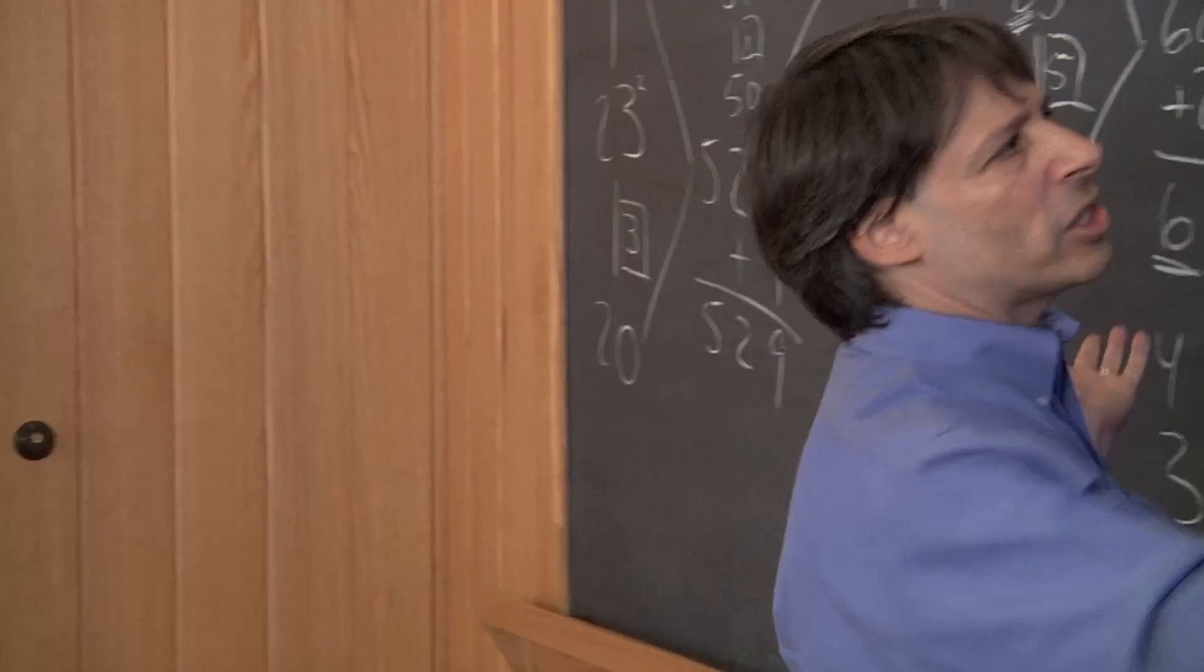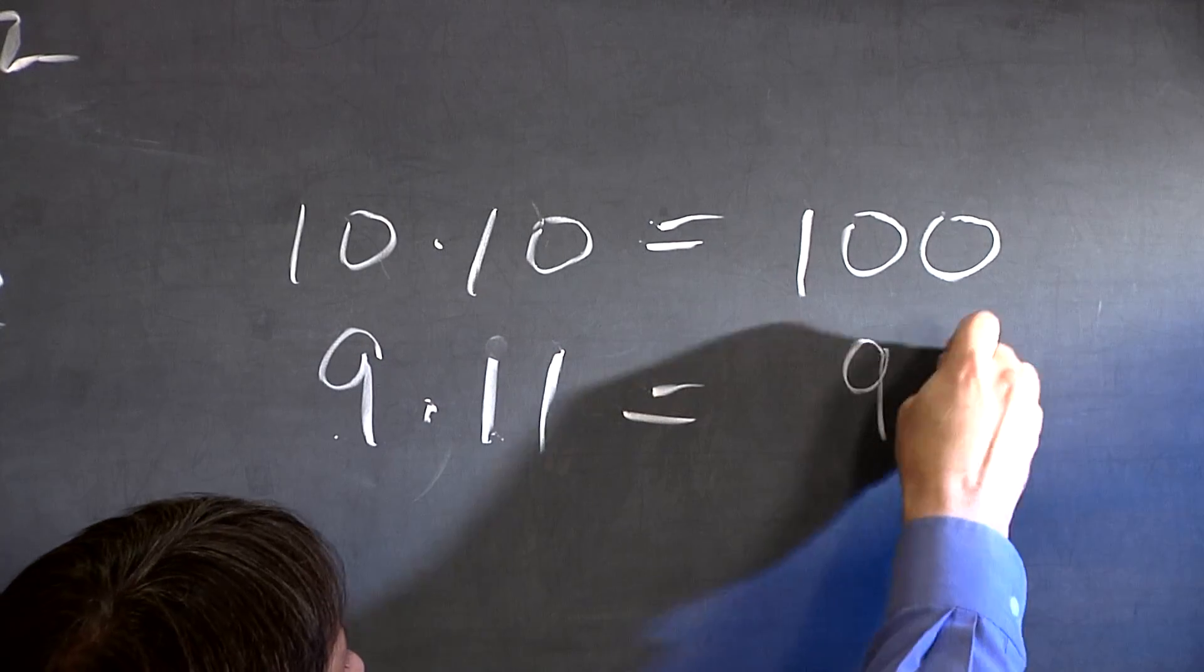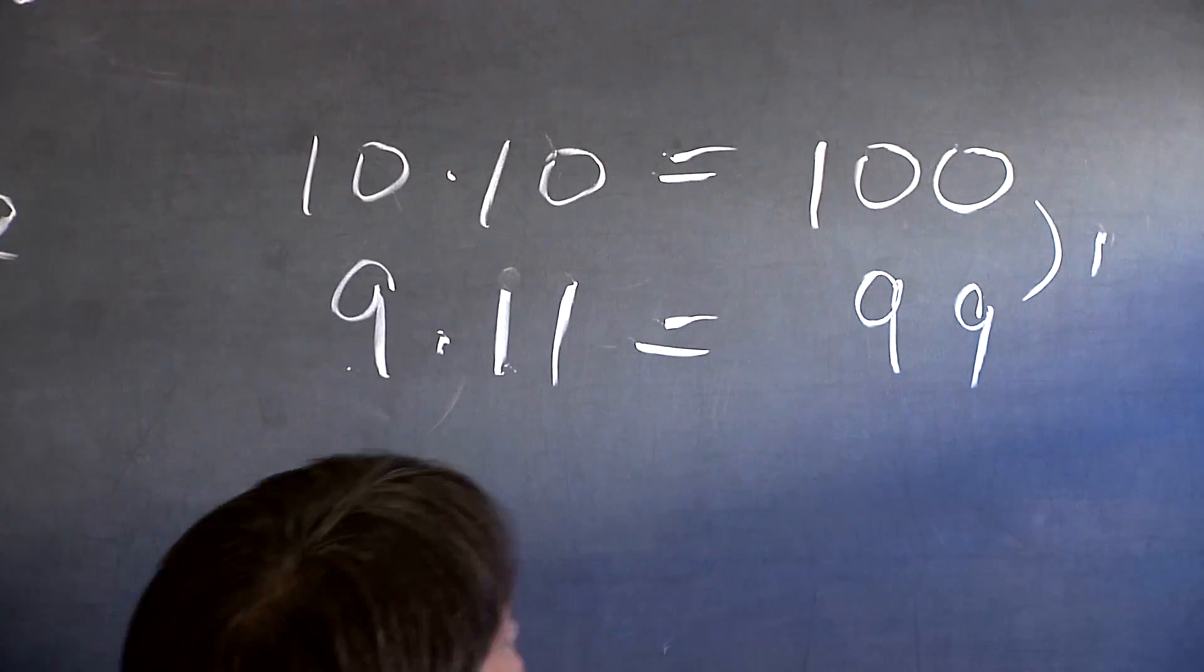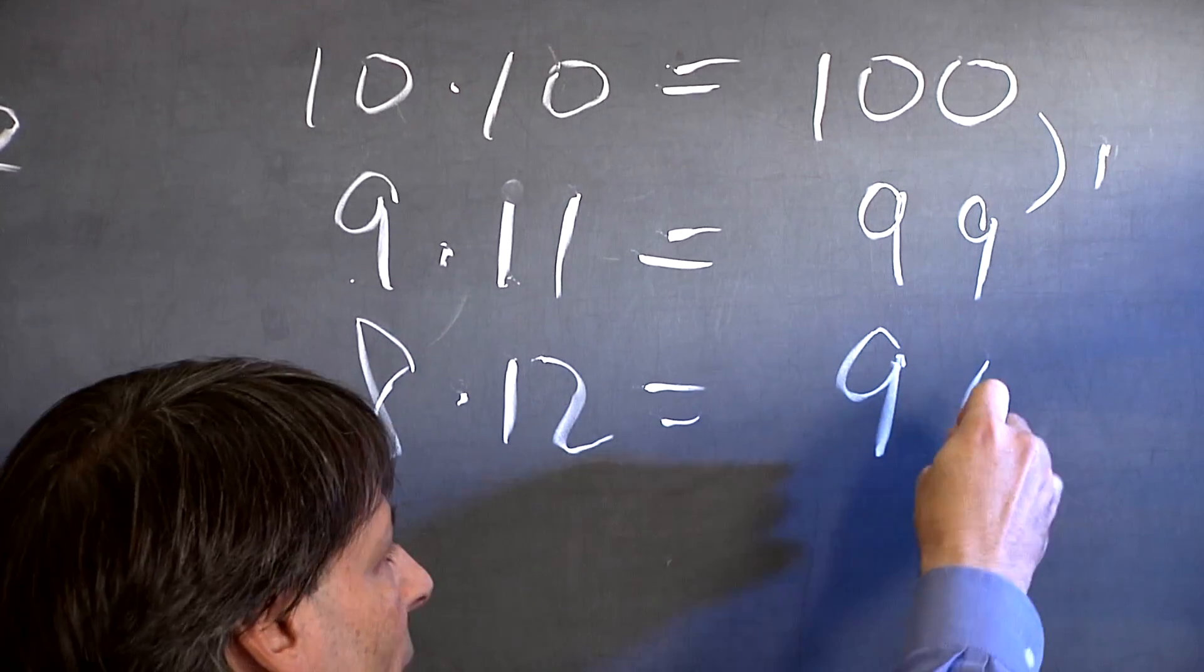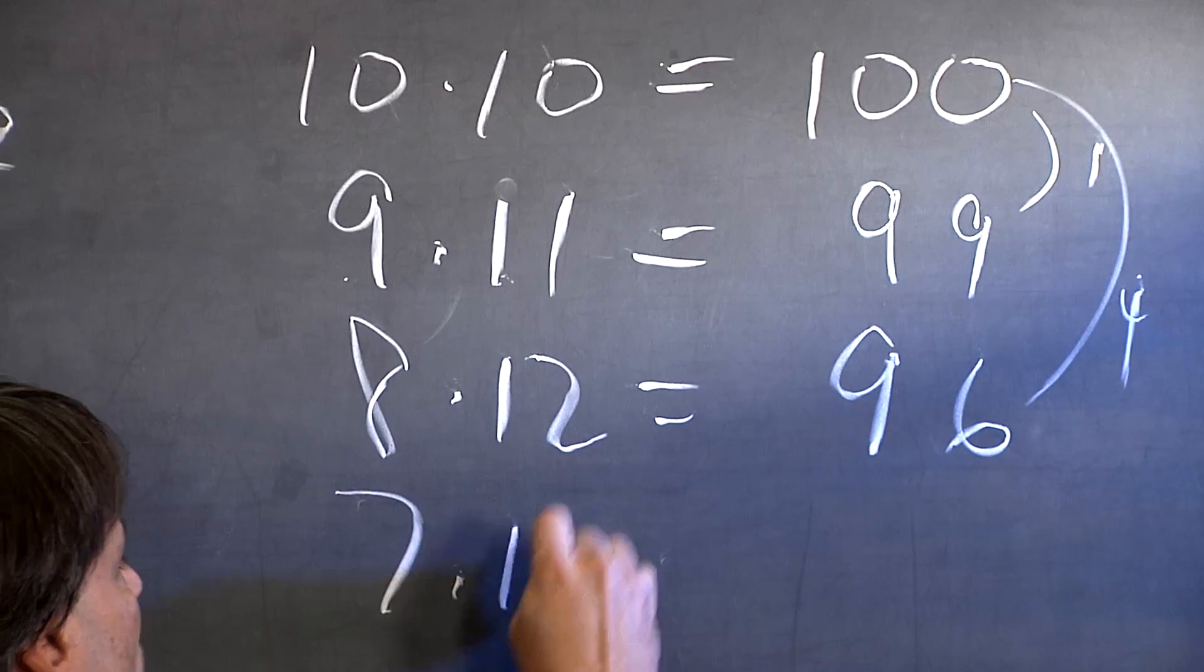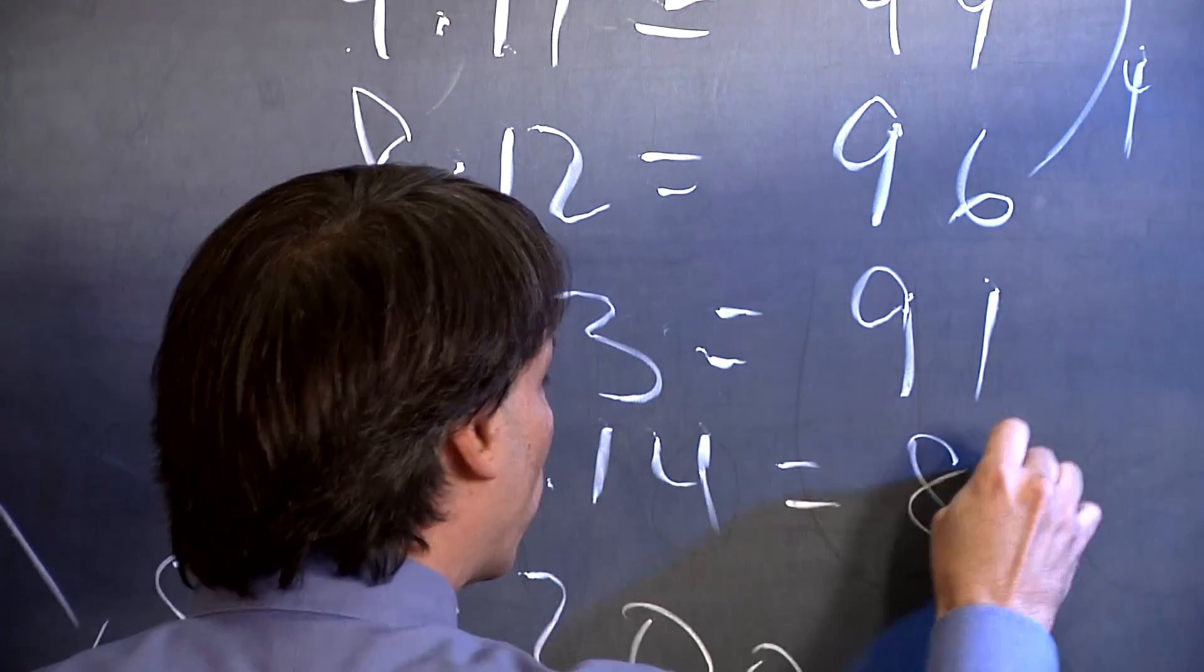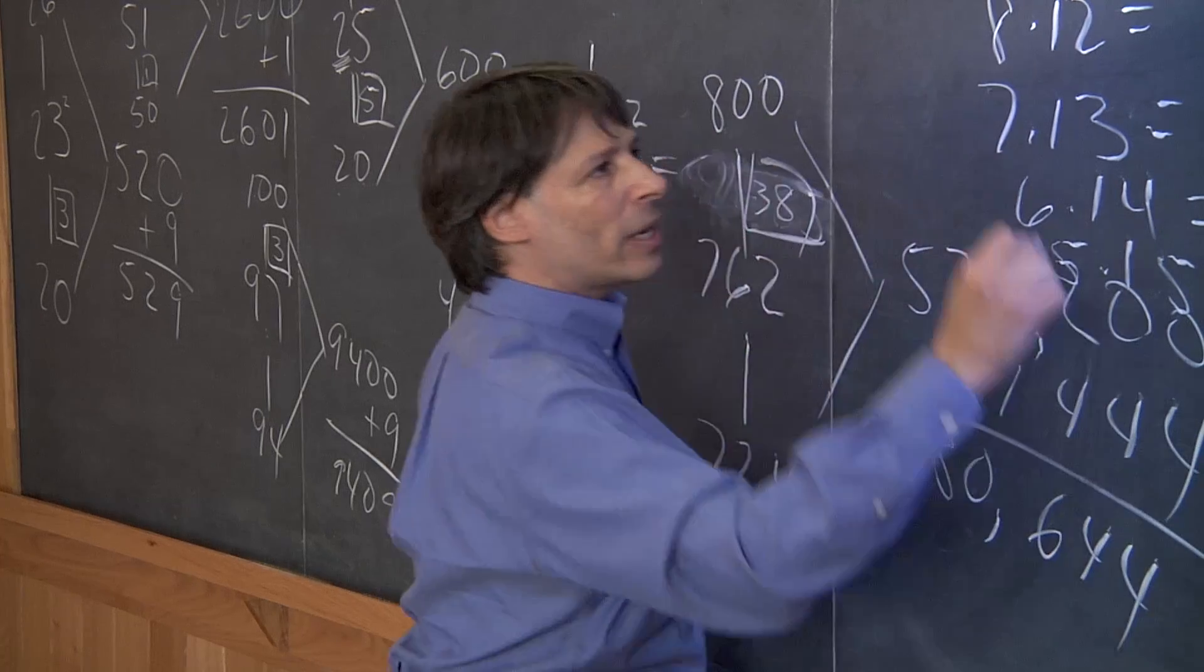So let's see, 9 times 11, those add up to 20. Their product was 99, which was almost 100, but it was shy by 1. Then 8 times 12 is 96, and that was almost 100, but that was shy by 4. Then 7 times 13 is 91, 6 times 14 is 84, 5 times 15 is 75, and so on.